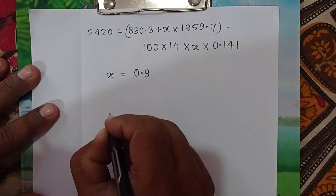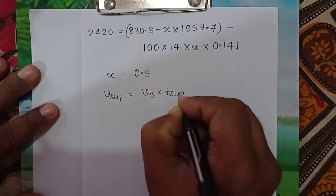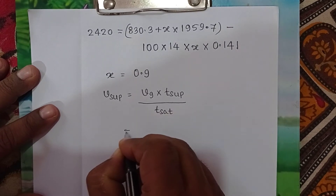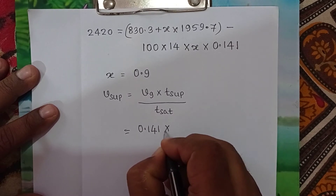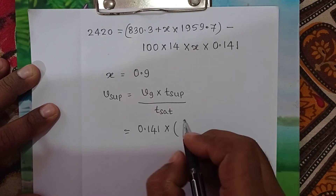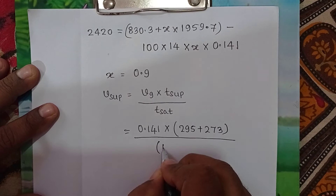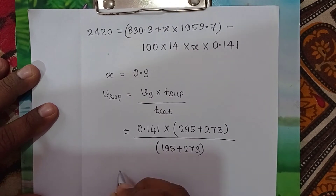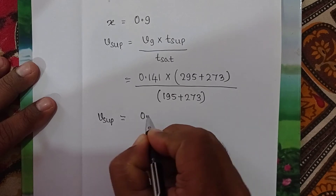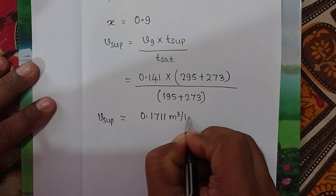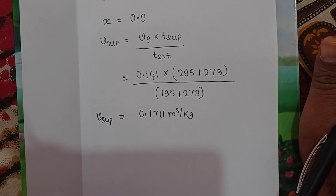Next, we find the specific volume of superheated steam using Charles' law: V_sup = Vg × T_sup / T_sat. Substituting: V_sup = 0.141 × (295 + 273) / (195 + 273). Remember to always add 273 to convert to Kelvin. Solving this gives V_sup = 0.1711 m³/kg.